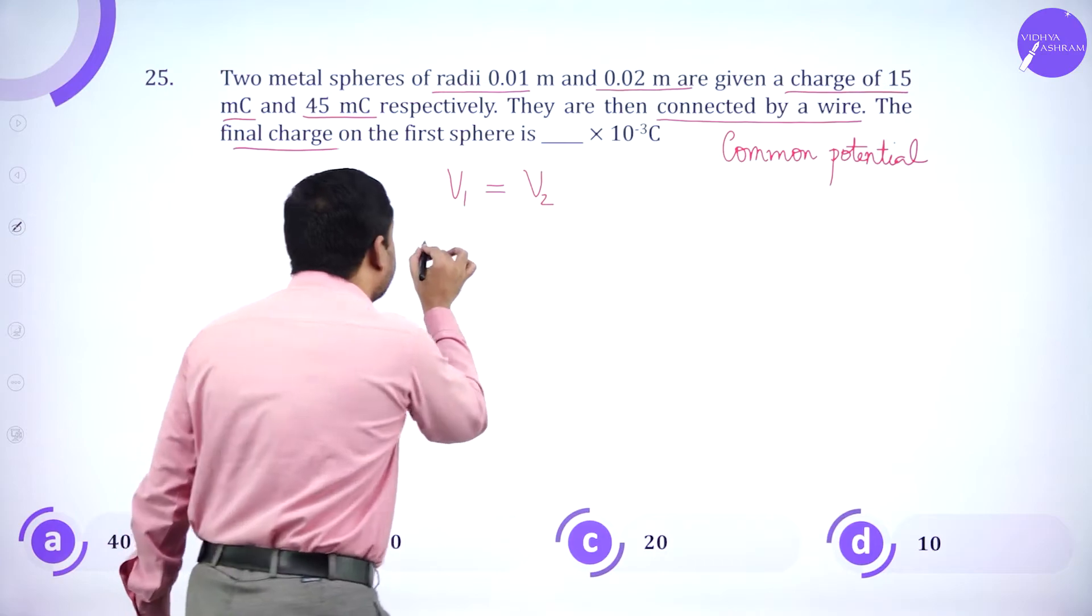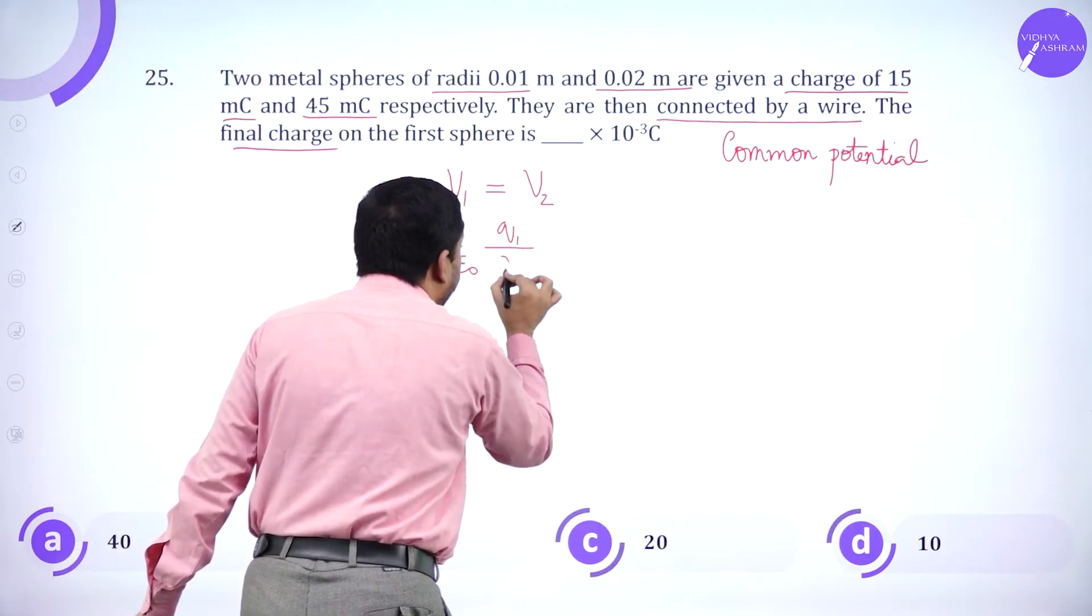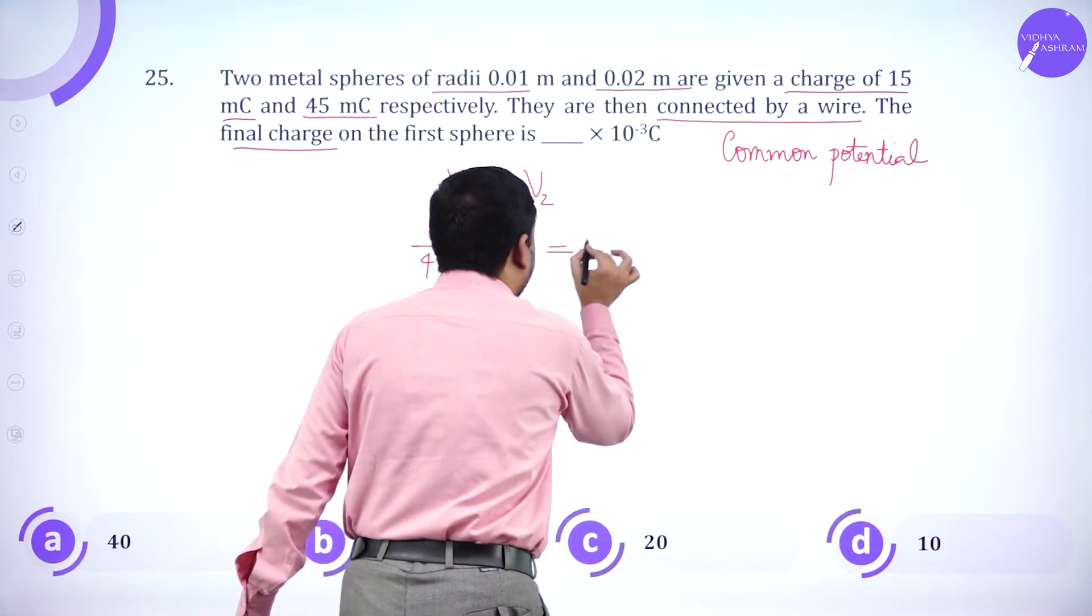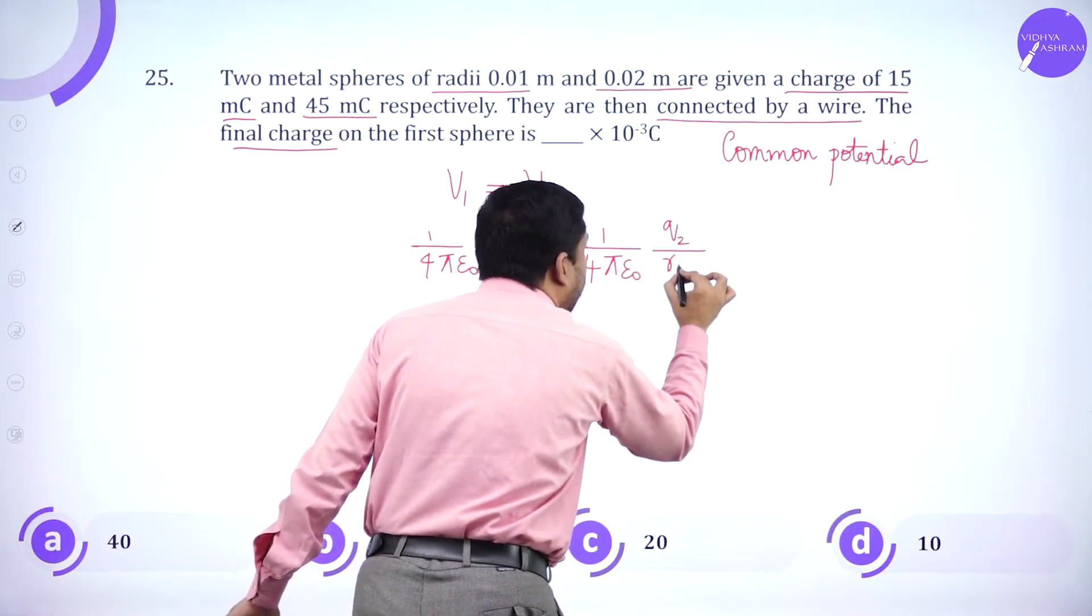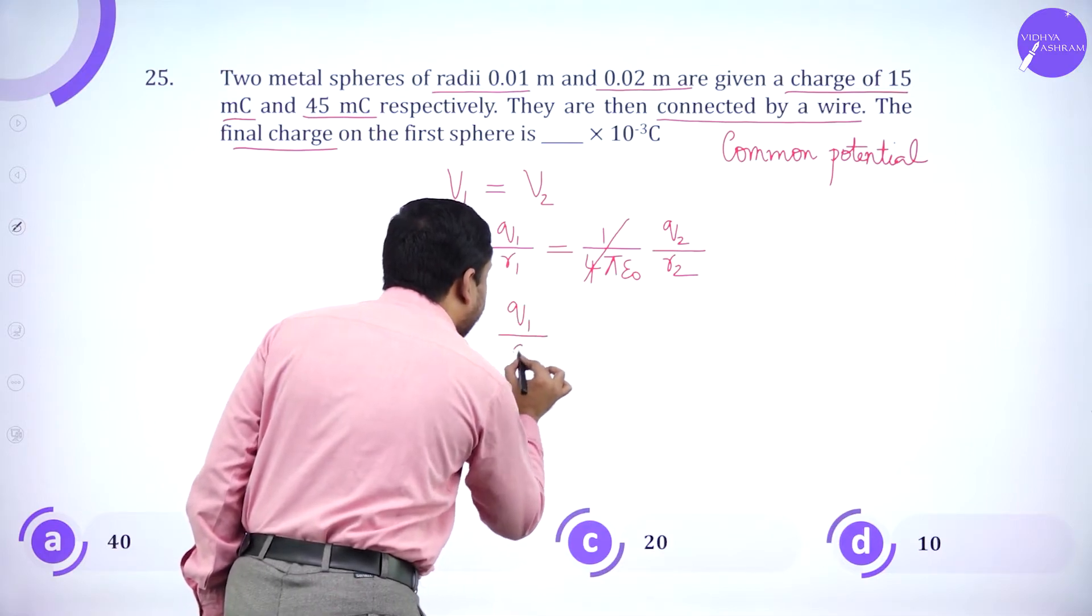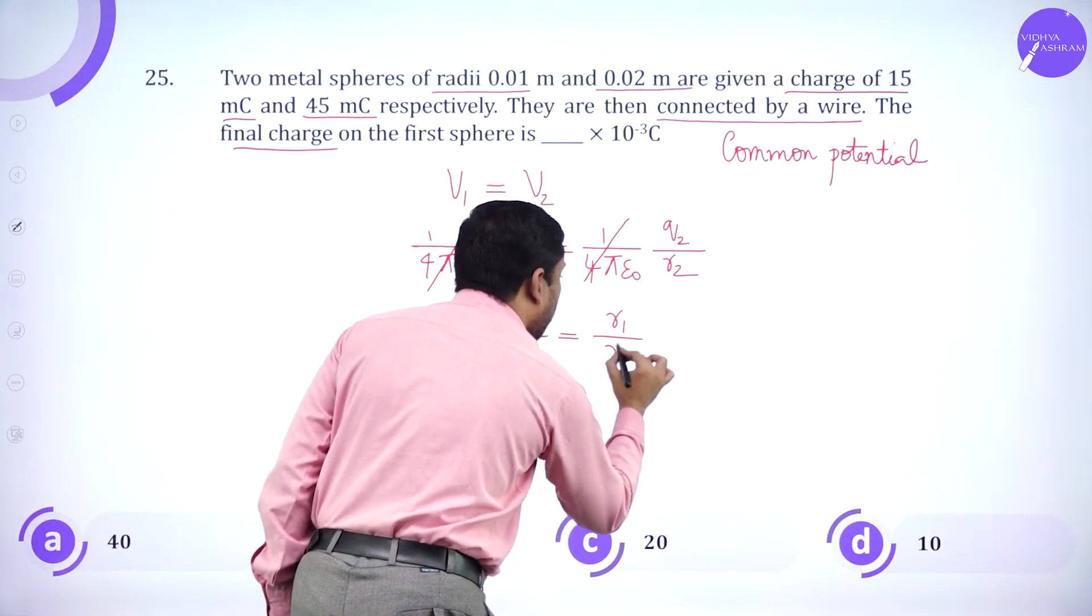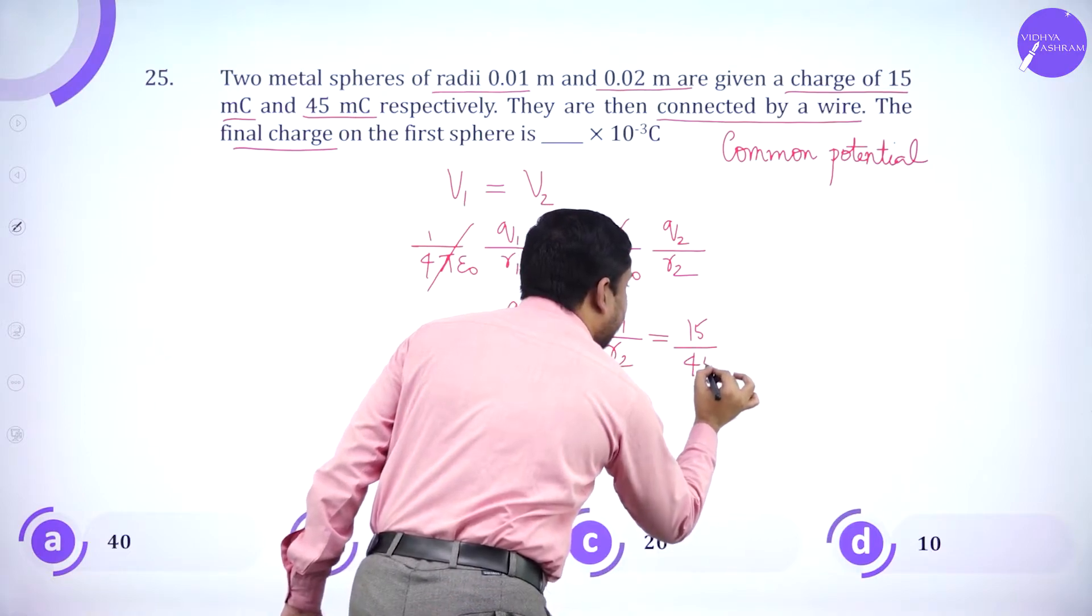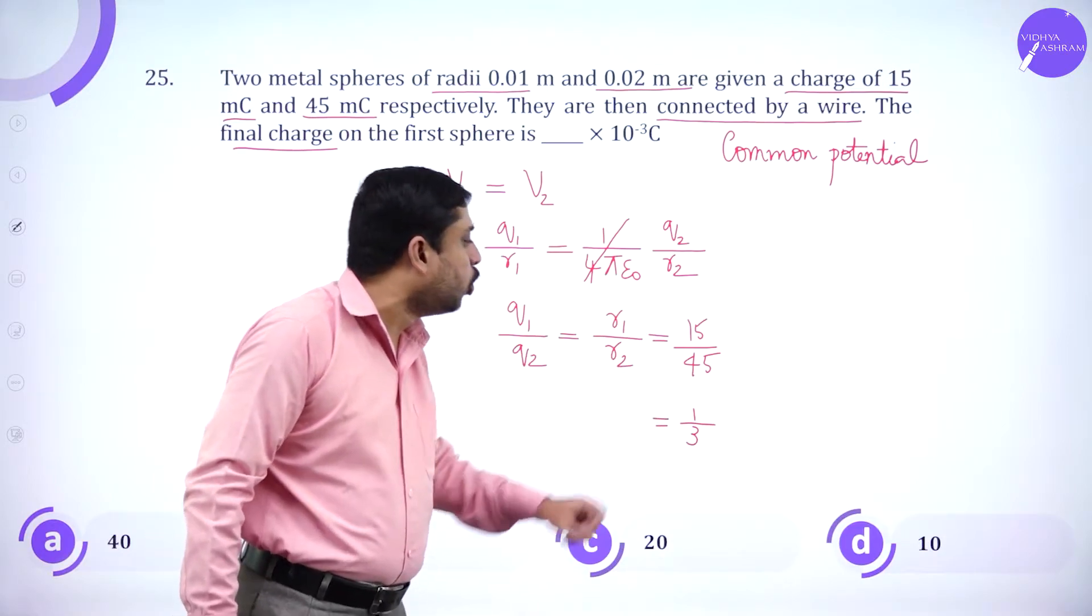The final charge on the first sphere has to be calculated. Since I say common potential, it means V1 equals V2. Give me the expression for potential. 1 by 4 pi epsilon naught, Q1 by R1 equals 1 by 4 pi epsilon naught, Q2 by R2. So Q1 by Q2 is R1 by R2.